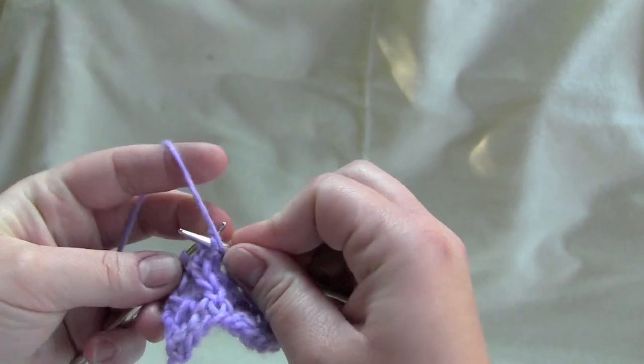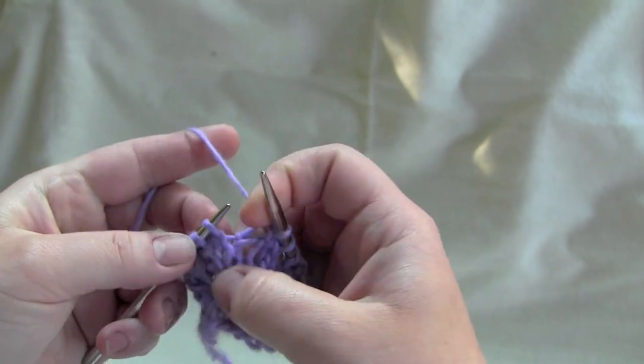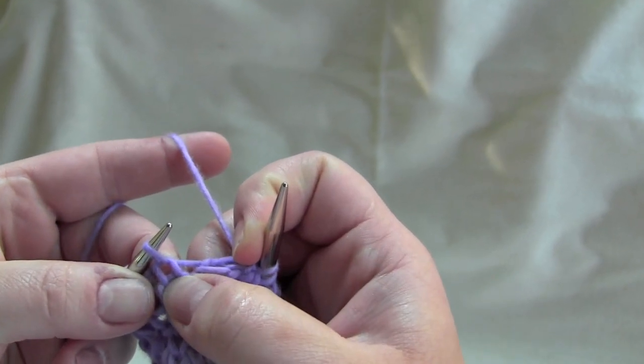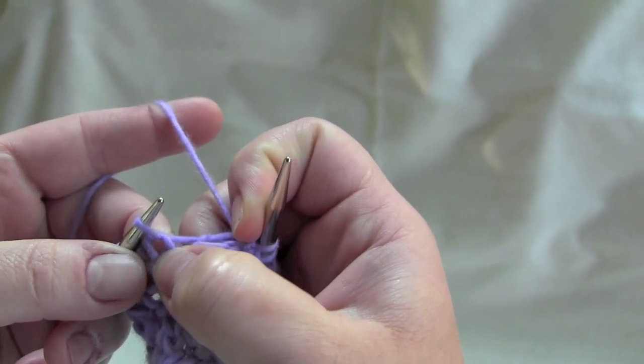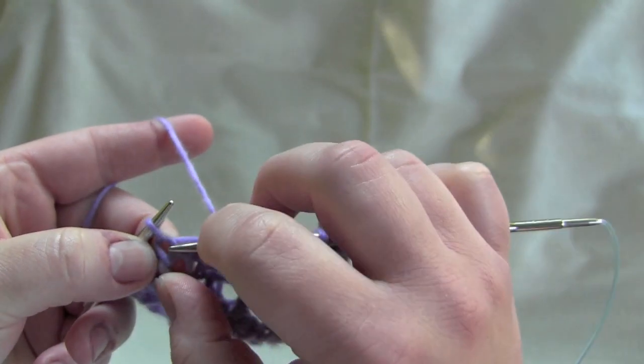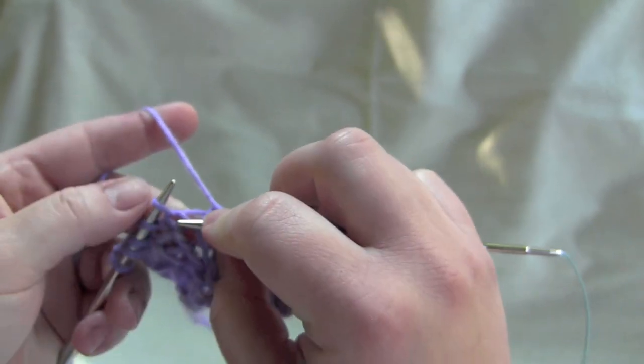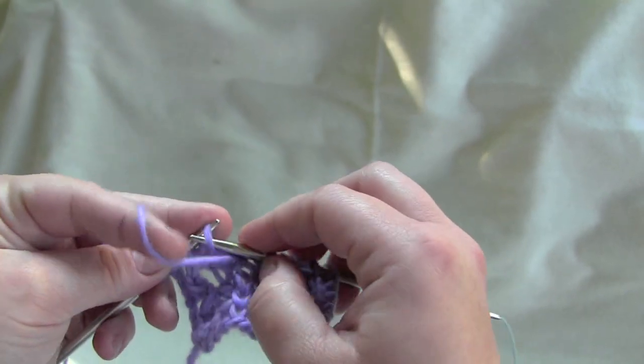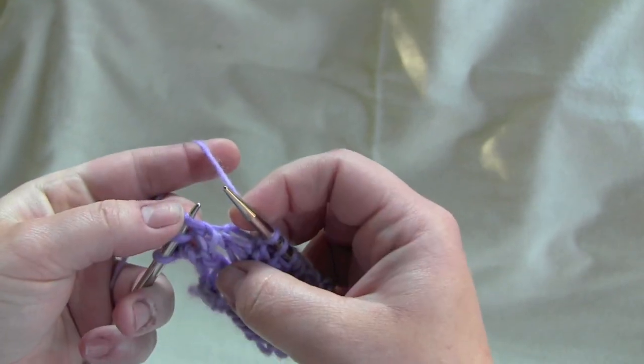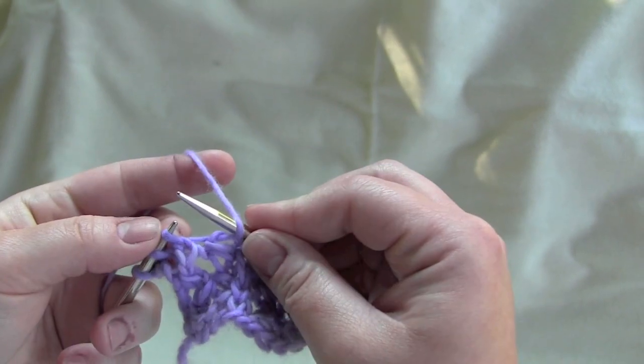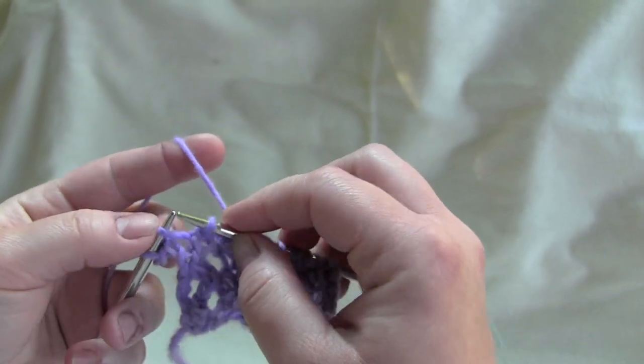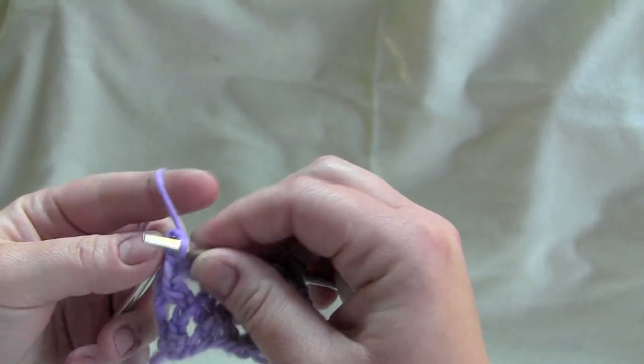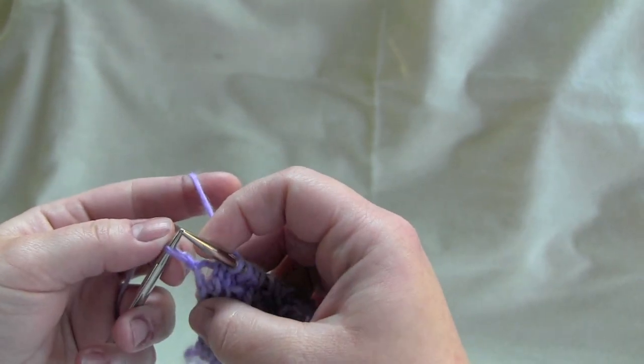And purl one, knit into the stitch below for your next stitch, right there, that guy. And purl one, yarn over, slip slip knit, and you should have one stitch left after your last repeat. So you just knit.